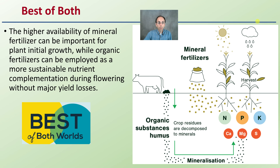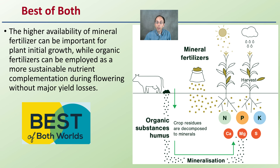For the best of both worlds: a higher availability of mineral fertilizers can be important for initial plant growth, while organic fertilizers can be employed as a more suitable, sustainable nutrient complement during the flowering stage without major yield losses. It plays to the strengths of both — using mineral fertilizers for quick availability and organic fertilizers for longer, more sustained growth.